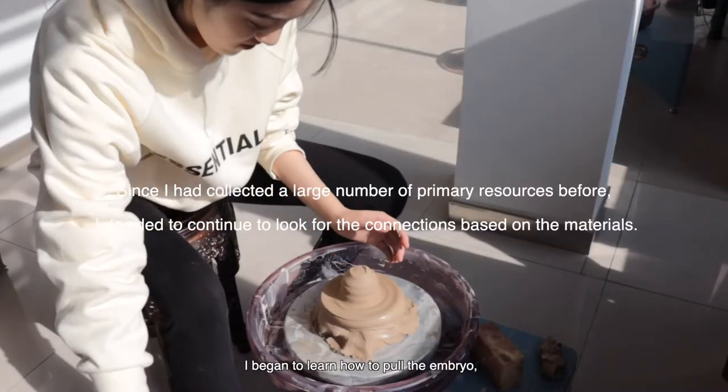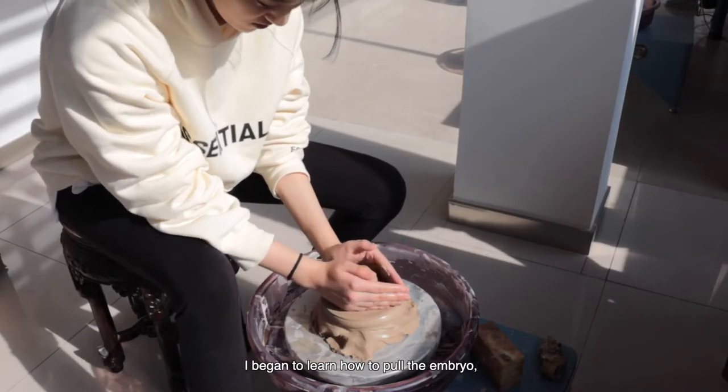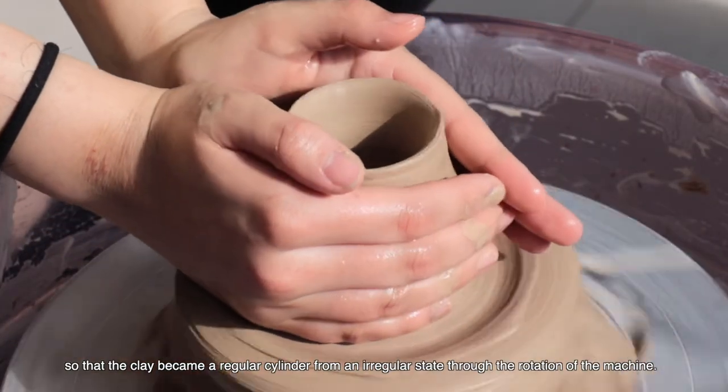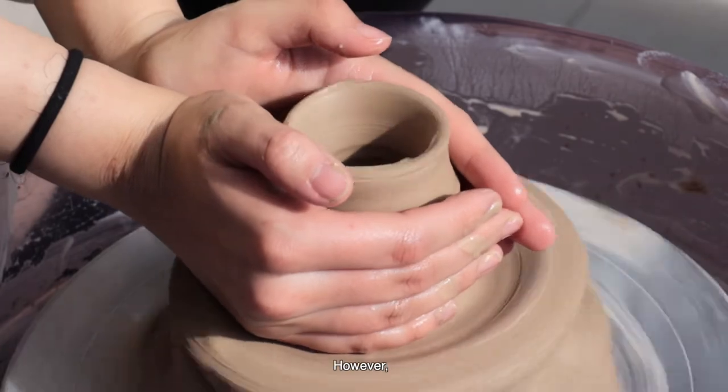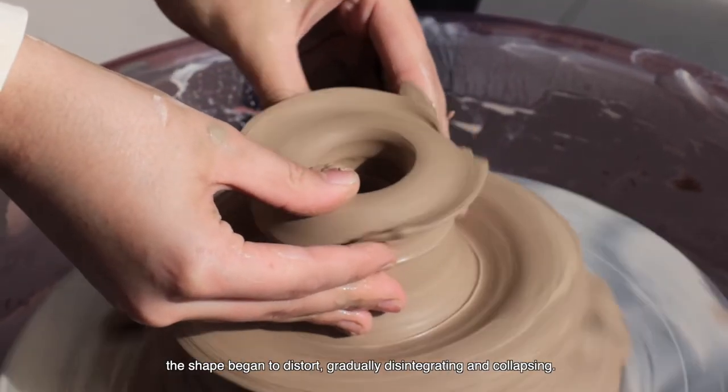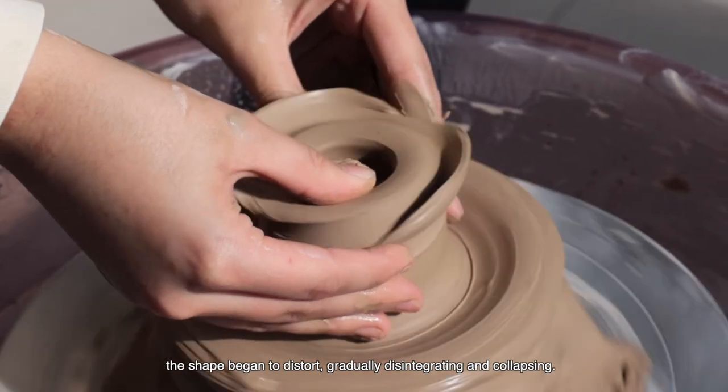I began to learn how to pull the clay, so that it becomes a regular cylinder from an irregular state through the rotation of the machine. However, the shape began to distort, gradually disintegrating and collapsing.